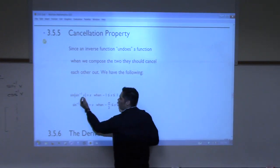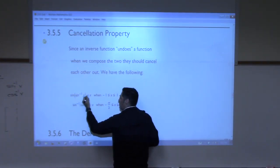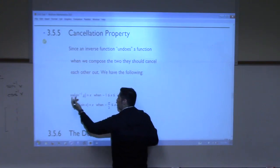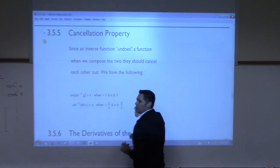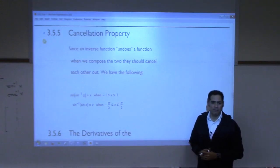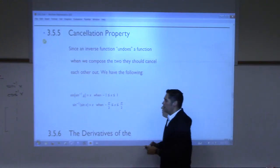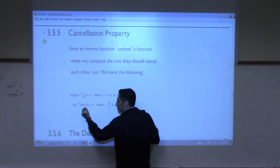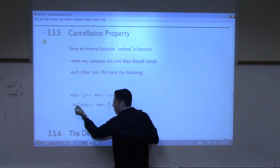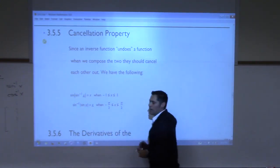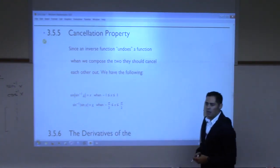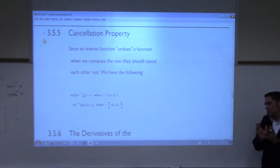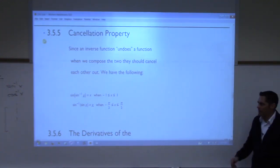If you plug x into inverse sine and then take that answer and plug it into sine, these two cancel each other out and you just get the x that went in to begin with. The same way if you do it the other direction: x goes into sine first, then through the inverse sine function, and it just spits x out.